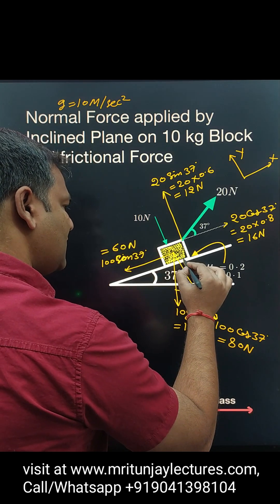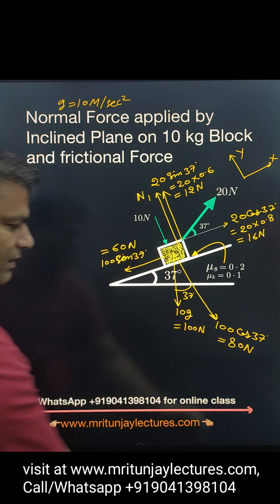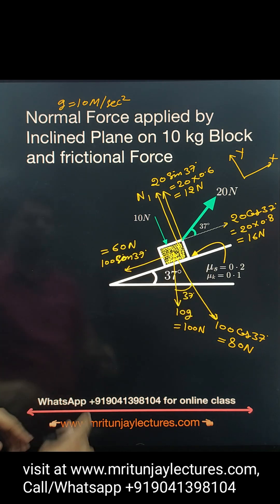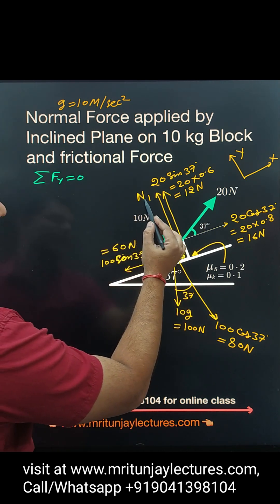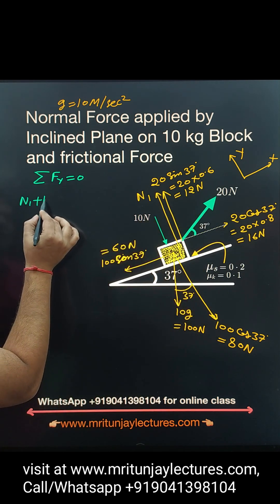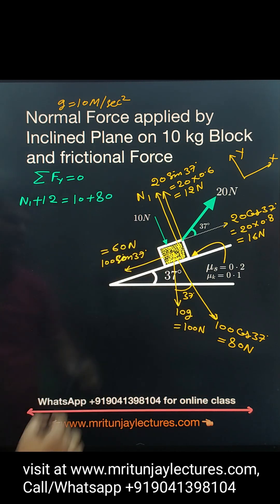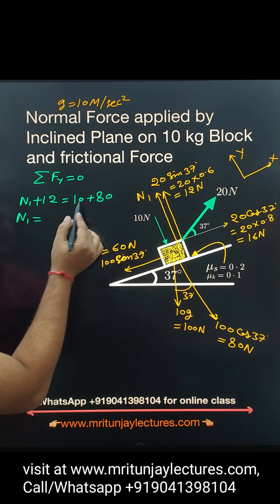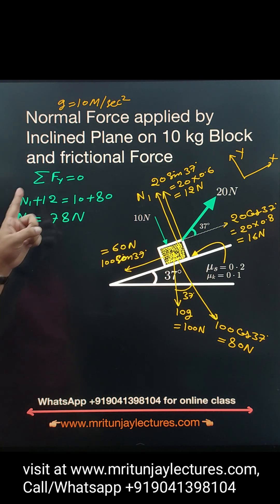The normal force applied by the inclined plane on the 10 kg block, N1, always acts perpendicular to the plane. This 10 kg block is not moving along the capital Y axis, so net force on Y axis equals zero. This is only possible if N1 plus 12 equals 60 plus 80, giving N1 equals 78 Newton. N1 is positive, confirming net force in Y direction is zero.